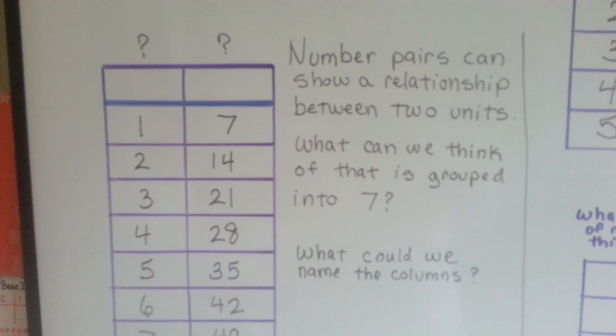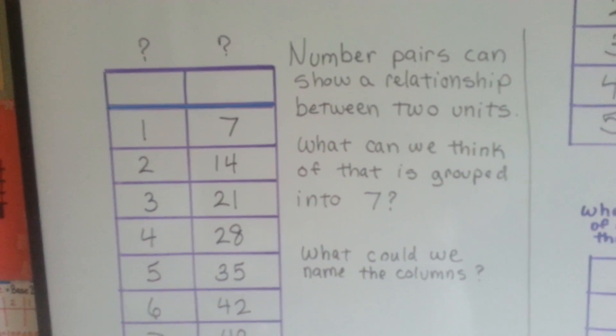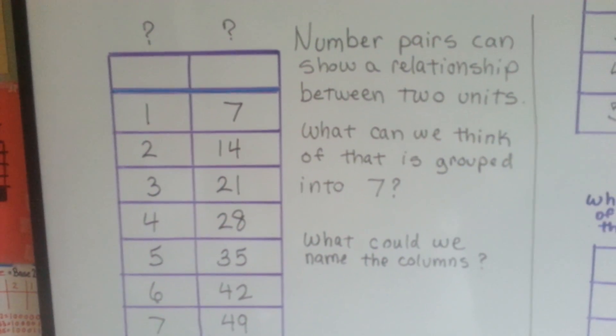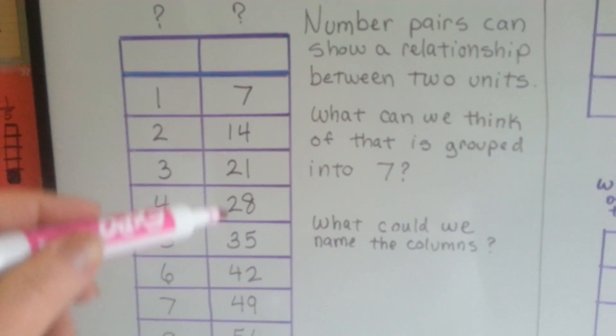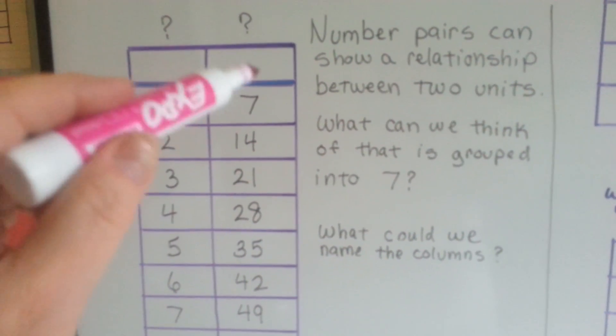Number pairs can show a relationship between two units. What can we think of that is grouped into sevens? What could we name these columns?